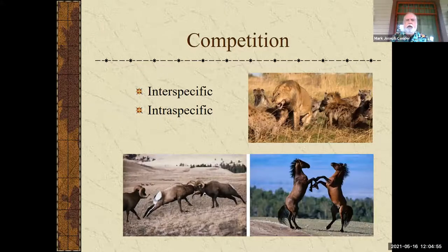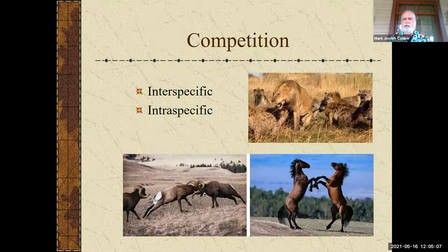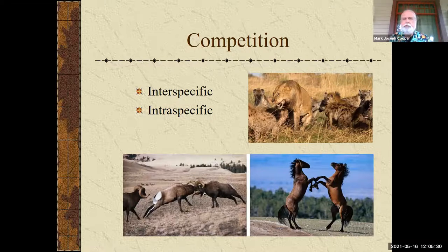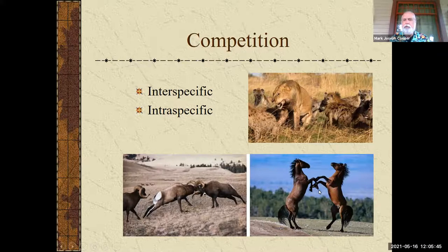We'll start with competition. There is interspecific and intraspecific — watch those prefixes carefully. Inter means between, like an interstate is a freeway that goes between states. Intra means within a single species. For the pictures on the right, this would be interspecific: we have an African lion and hyenas obviously fighting over something — my guess is some kind of prey item or territory. Below those two pictures, we have intraspecific, where we have two males fighting, and then two horses probably fighting over territory or a female.